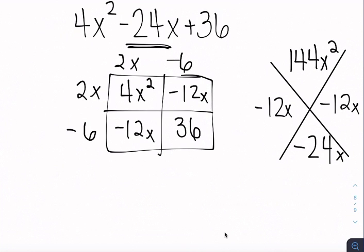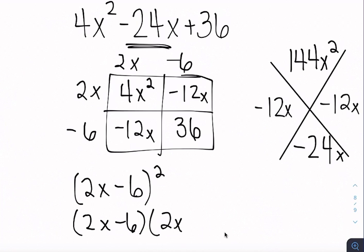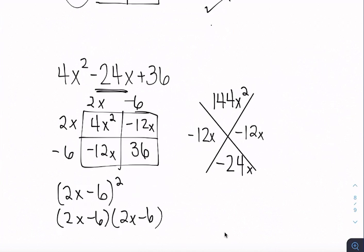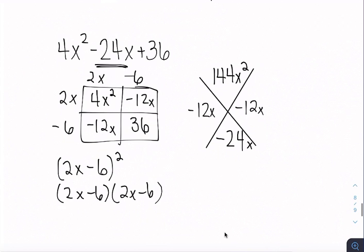Oh, so they're the exact same. So this is going to be 2x minus 6 squared. You could also write that as 2x minus 6 times 2x minus 6. Either one of those works, but that is how we use the generic rectangle and the diamond problems to help us factor quadratics.